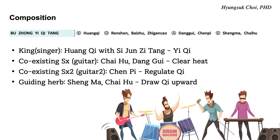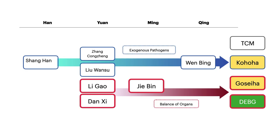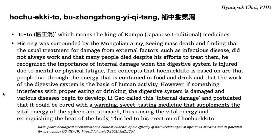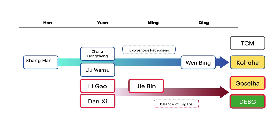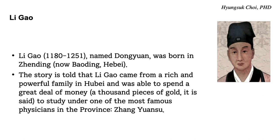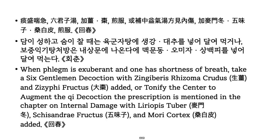This formula was introduced to Japan, and Japanese people love it — especially the Goseiha school, which calls it 'Bujong Ichi Tang E O To': 'To' means Tang, 'E' means medicine, 'O' means king, so it means 'king of medicine decoction.' Japanese people developed Hara diagnosis (abdominal diagnosis) based on Li Gao's philosophy and treatment strategy. This became the most dominant school in Japan before the Kohoha appeared in the late Edo period. Bujong Ichi Tang remains one of the most commonly used formulas in Japan, Korea, and China.